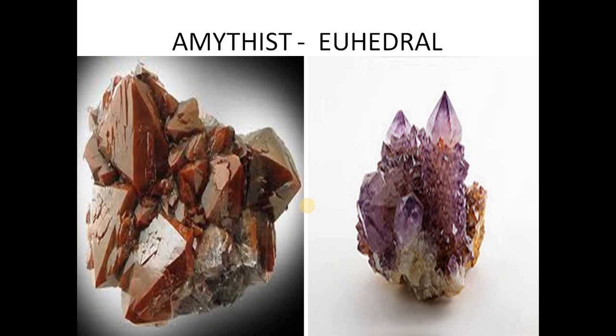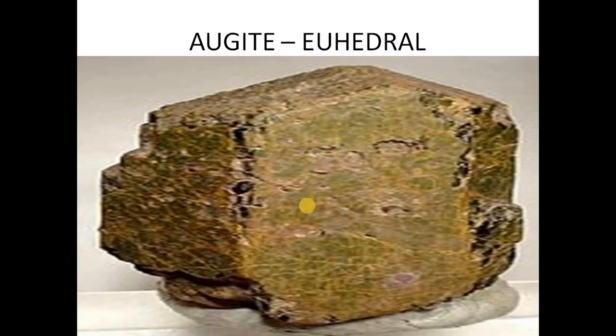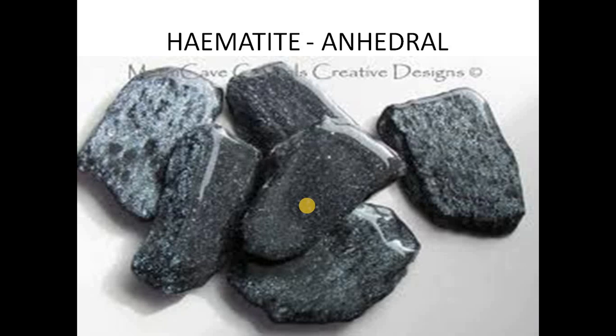This mineral amethyst has beautifully developed faces, hence its form is euhedral, as clearly shown in both pictures. Garnet — a spessartite variety — has all faces well developed; rhombohedron faces are developed and we can say euhedral form. This is augite; the faces are not so well developed, but one can identify the faces, hence we can call it euhedral form.